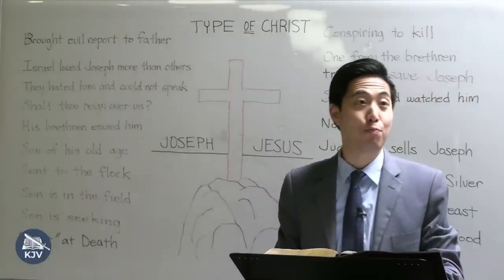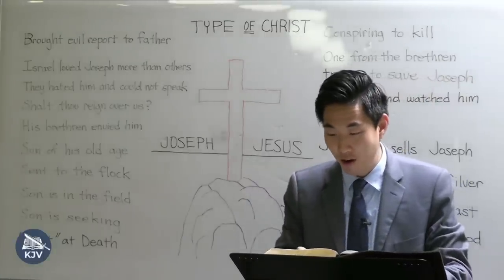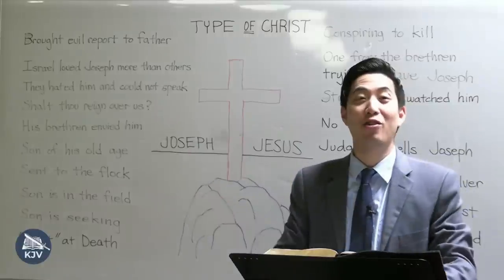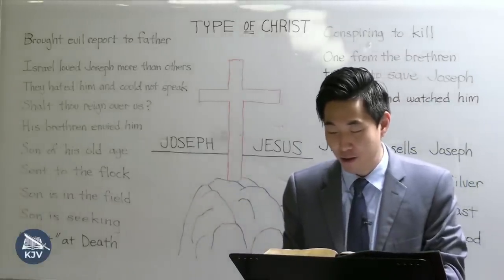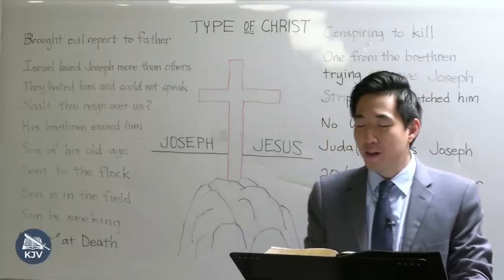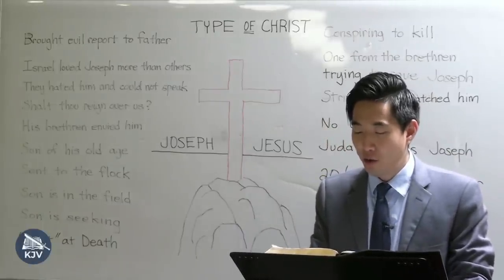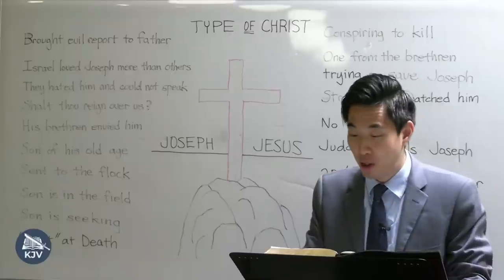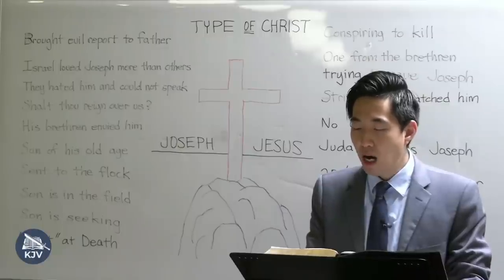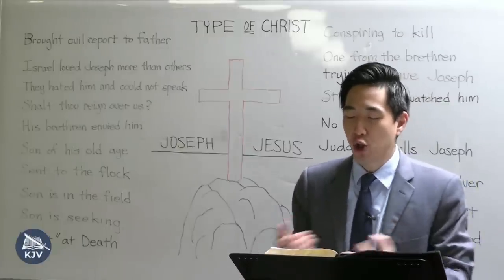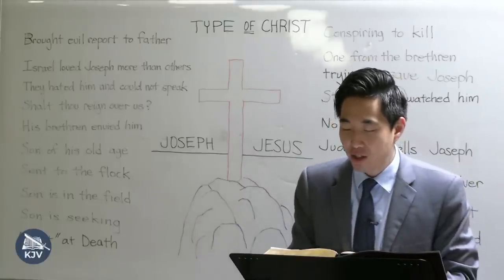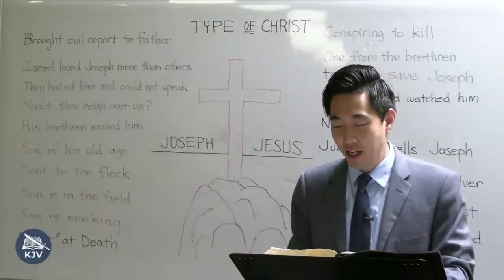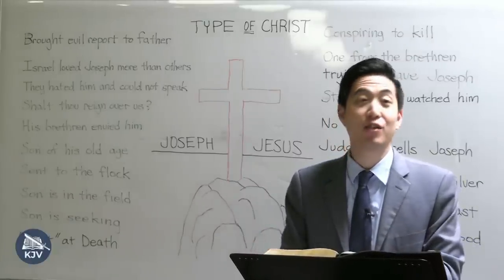Imagine a little brother saying that to you. Verse 8: 'And his brethren said to him, Shalt thou indeed reign over us? Or shalt thou indeed have dominion over us? And they hated him yet the more for his dreams and for his words.' His brothers said, 'Are you really going to rule over us? Will you really have dominion over us?' They hated him even more because of the dreams he had and the words he said.